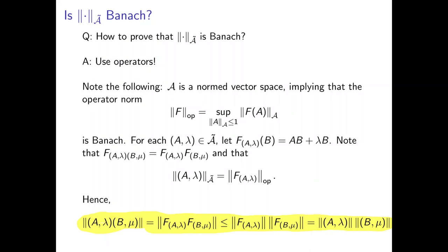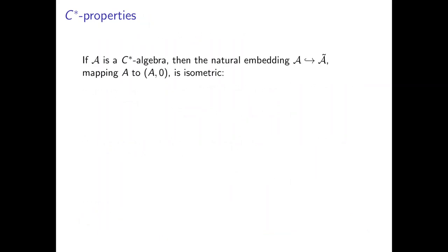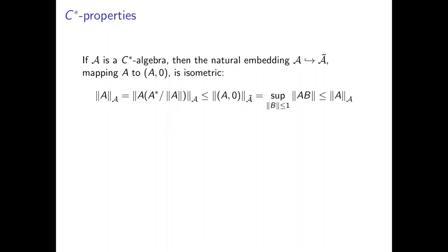This holds for any Banach-star algebra, but what more can we prove for C-star algebras? The first easy property is that if A is a C-star algebra, then the natural embedding of A into A-tilde, mapping A to (A, 0), is an isometry. This is due to the C-star property: the norm of an element A equals the norm of A·A-star divided by the norm of A, because the C-star property gives ‖A‖² = ‖A·A*‖.